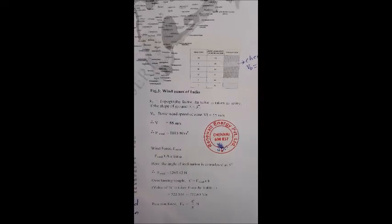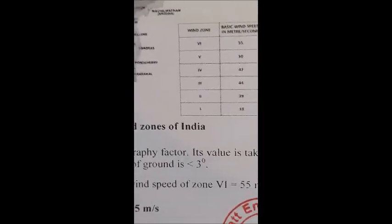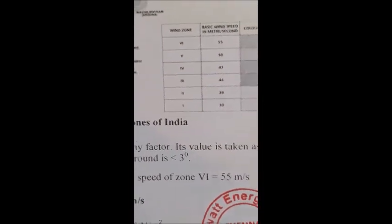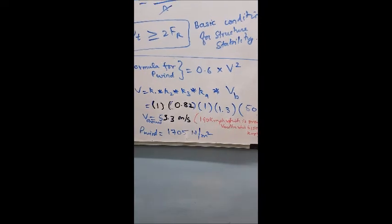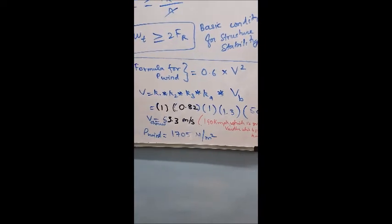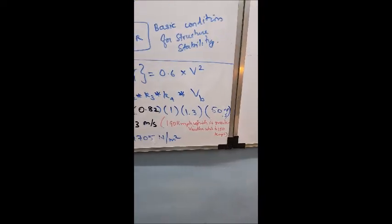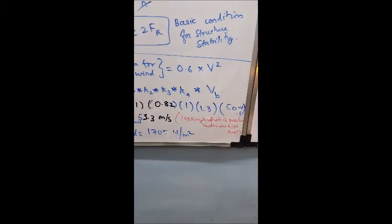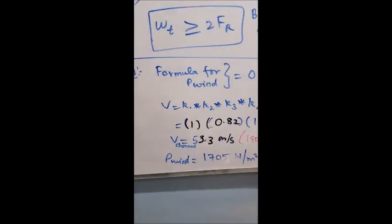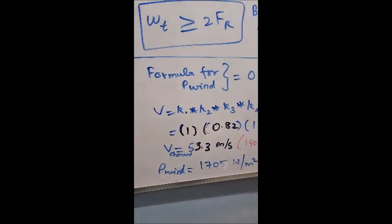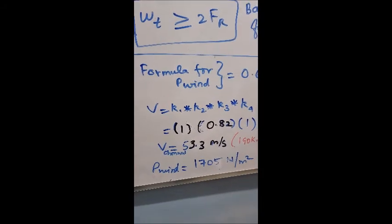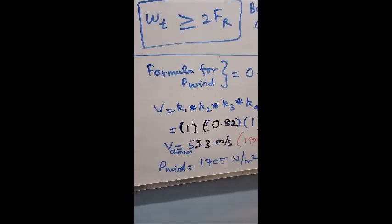The basic wind speed zone in this paper to 6, but we are interested in zone number 5, which is 50 meters per second as per Chennai or Madras according to this graph. So here we are with all the values of K1, K2, K3, K4 and the base speed. We found that the velocity of the wind we should look into consideration is 53.3 meters per second.